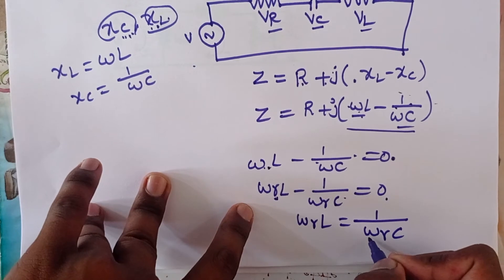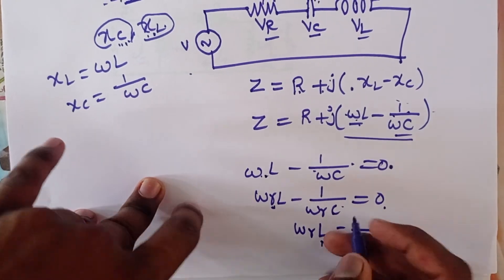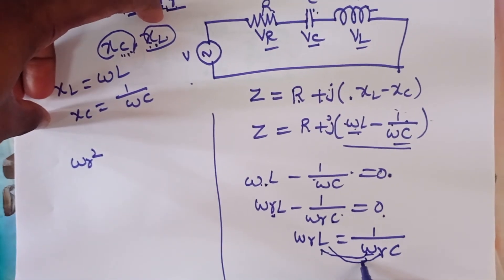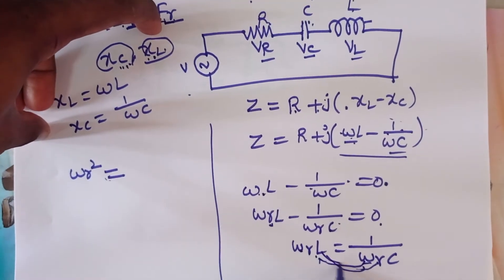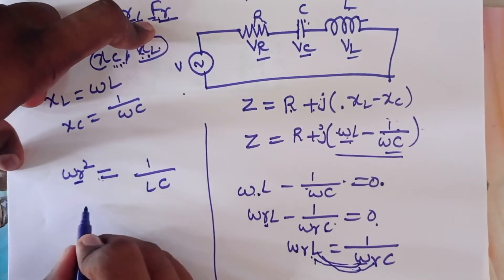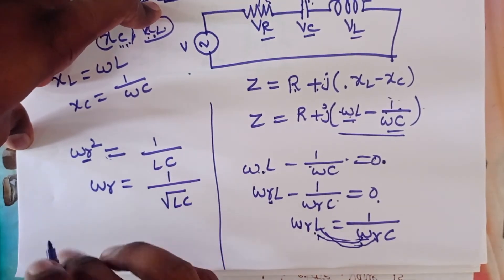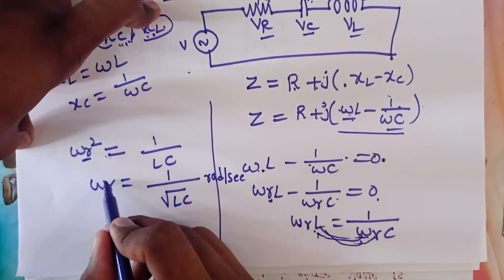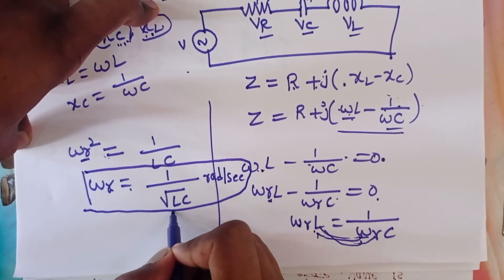We need the value of Omega_R. Moving Omega_R to one side and L to the other gives Omega_R squared equals 1/(L·C). Therefore, Omega_R equals 1 divided by the square root of L·C. This is the resonance frequency, and the units are radians per second.